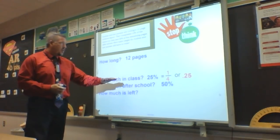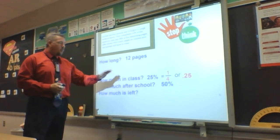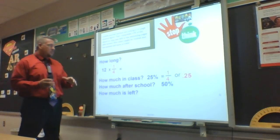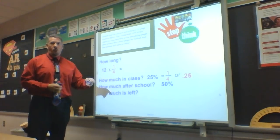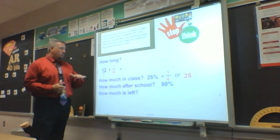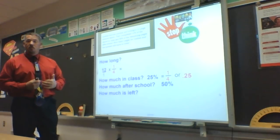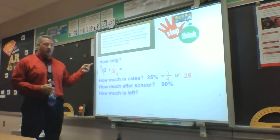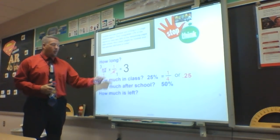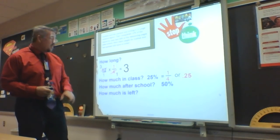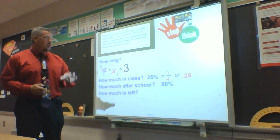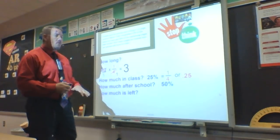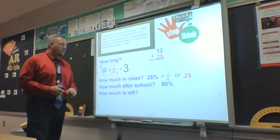For step one, I know 25% or one-fourth or 0.25 has already been written in class. Starting with the fraction: 12 times one-fourth. I can't multiply a whole number by a fraction, so I put 12 over 1. I cross-reduce: 4 goes into 4 once, 4 goes into 12 three times. That leaves me with 3 over 1, which is just 3. So in class, they wrote three pages. But do I use that three in the next step? I don't — let me explain.